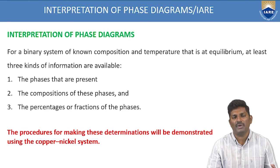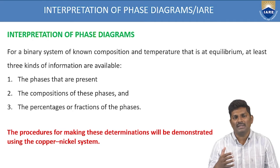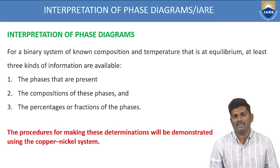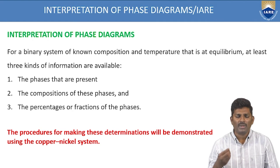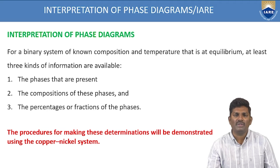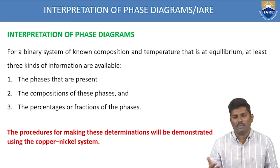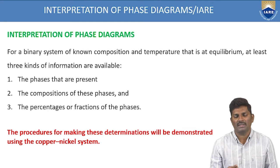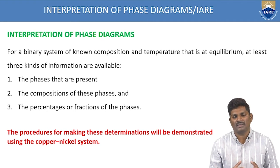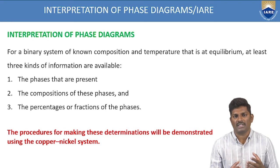If you change the composition in any given metal, the microstructure will change as well as the material characteristics and properties will change. Coming to temperature — if you increase the temperature step by step, the solid material slowly converts into another phase. Because of this change in phase, there is a change in characteristics, microstructure, and the mechanical and physical properties of the material.